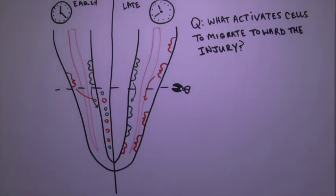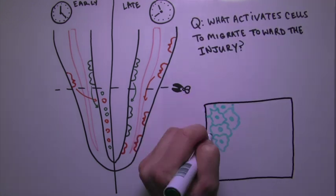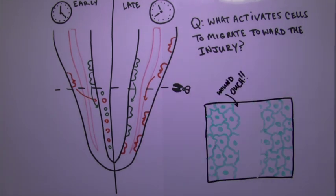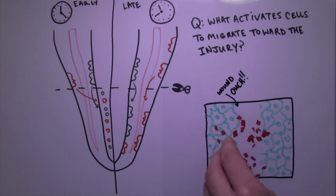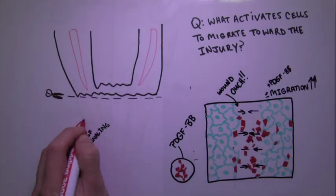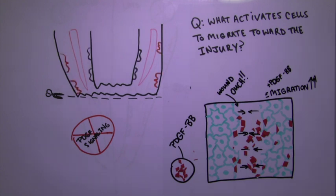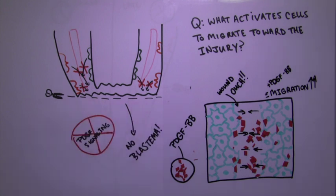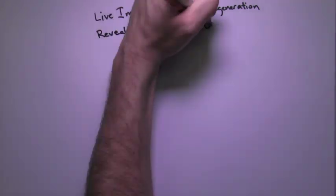So what activates cells to migrate towards the injury site? To find out, we made wounds in monolayers of cultured axolotl cells and then added different factors to find such a pro-migratory signal. We found that the protein PDGF-BB boosted cell migration in cultured cells, and inhibiting PDGF signaling in vivo completely blocked cell movement, showing that PDGF-induced migration is critical for forming the blastema.